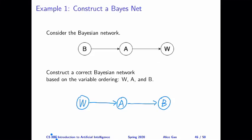Hello everyone, this is Alice Gao. In this video, I'm going to discuss the first example on constructing a correct Bayesian network. This is the example in lecture 11 on slide 46.